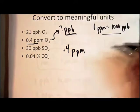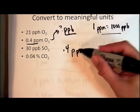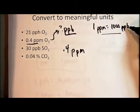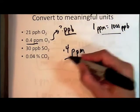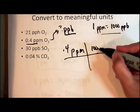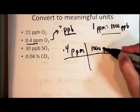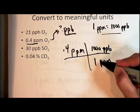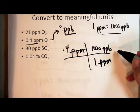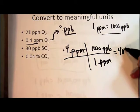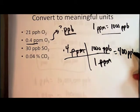And I'm going to multiply it. I want the parts per million to cancel, so I'm going to make my unit factor to be a thousand parts per billion over one part per million. A thousand parts per billion over one part per million. The part per million unit cancels and that ends up 0.4 times a thousand is 400 parts per billion.